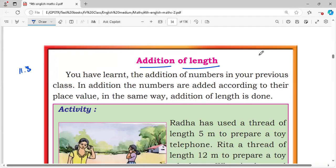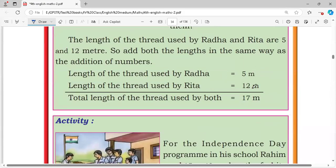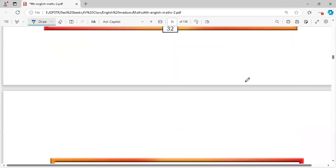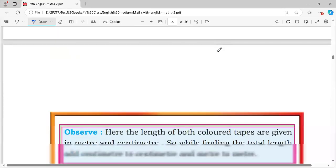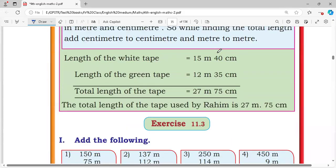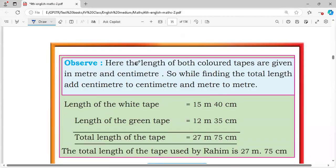Core Concept of Addition of Length is add m to m and cm to cm separately, or else convert m to cm and add. Here the length of both color tape are given in m and cm, so while finding the total length add cm to cm and m to m. This is the Core Concept.